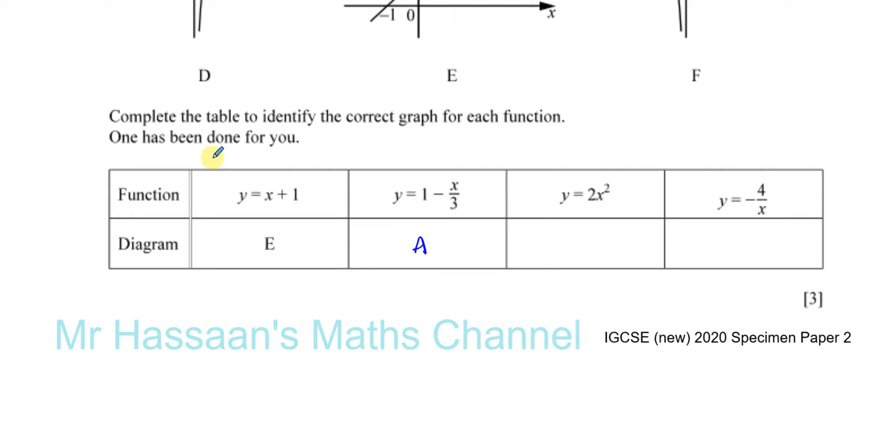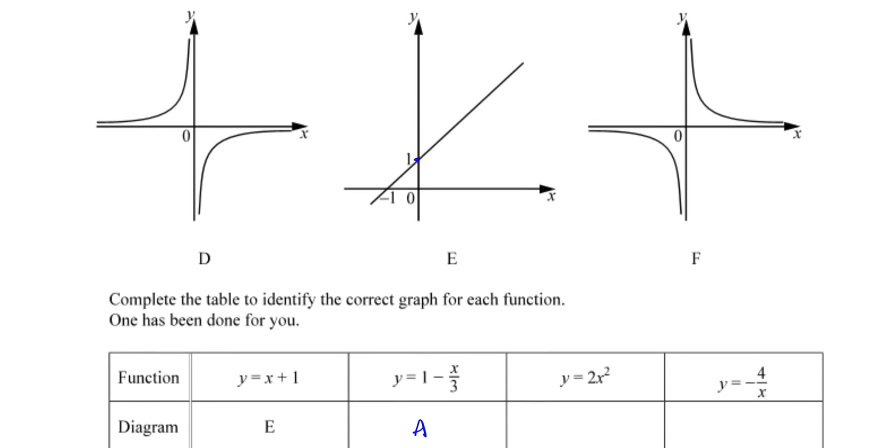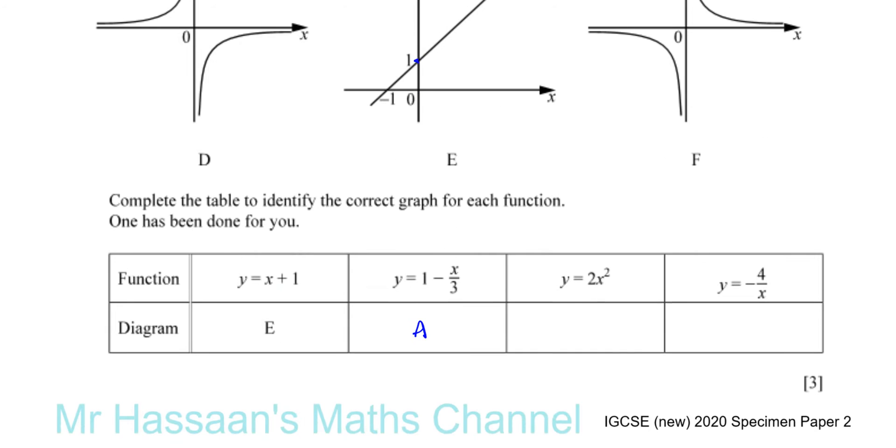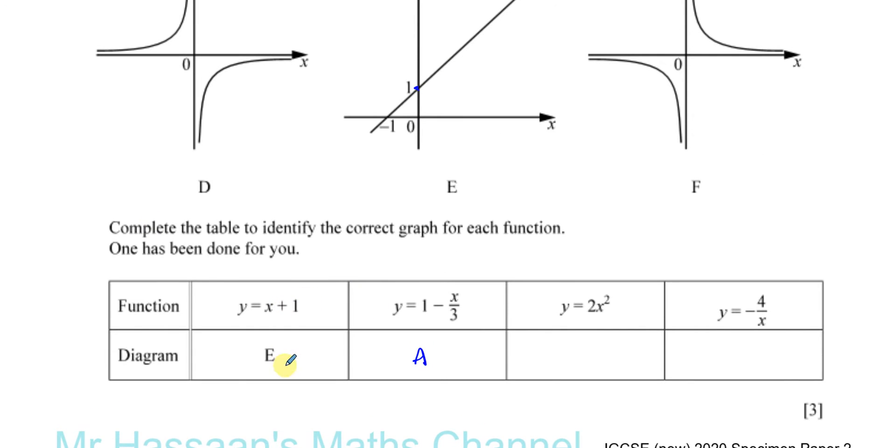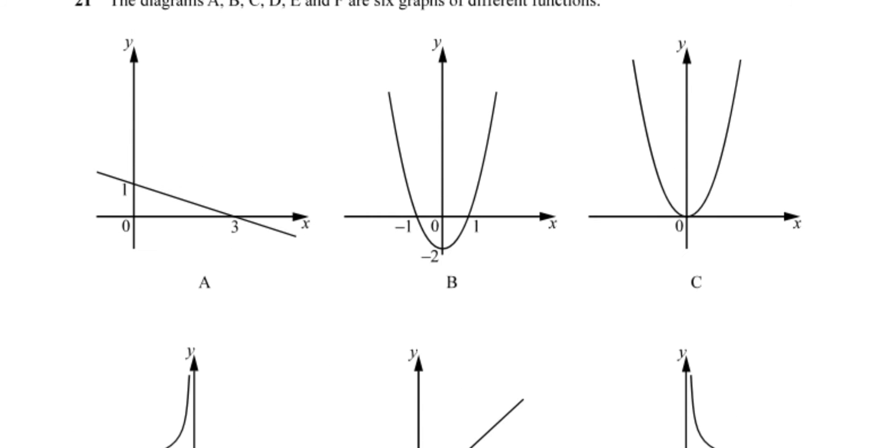This is definitely graph A. We don't even have to look at anything else except the fact that it's a straight line, because they already told us the first function is E, so the only other one it can be is A. It shouldn't take you very long to get that.